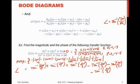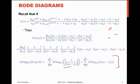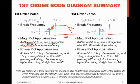For a first-order zero, it's the mirror image of the pole. The magnitude starts at 0 dB, hits ωb, and then has a slope going up at plus 20 dB per decade. So poles and zeros are just mirror images of each other in the magnitude plot.